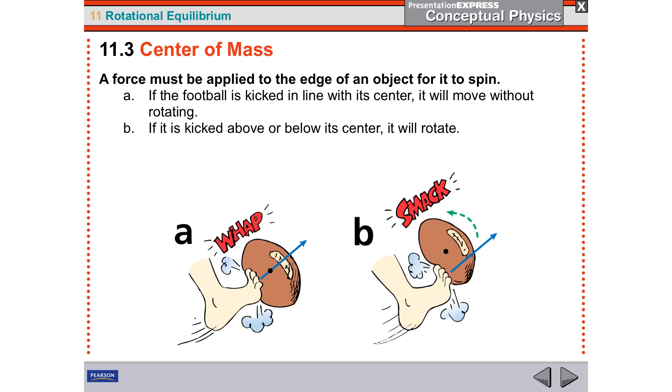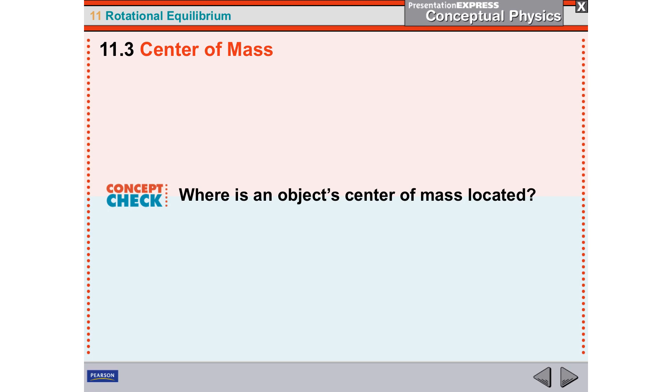So just a picture. Kicking it at the center of mass will make it accelerate with no spin. Kicking it below or above its center of mass will create a torque, and then that torque will cause it to go with a spin.